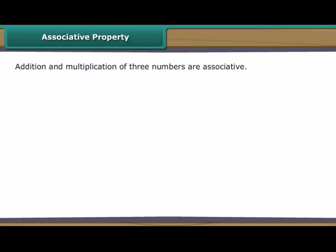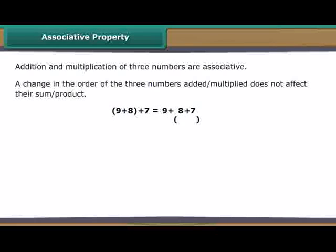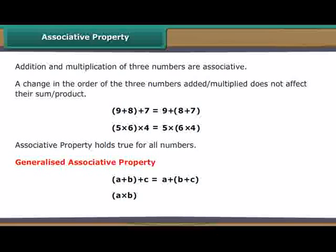Associative property: Addition and multiplication of three numbers are associative. In other words, a change in the order of the three numbers added or multiplied does not affect their sum or product. 9 plus 8 in brackets plus 7 is the same as 9 plus 8 plus 7 in brackets. 5 into 6 in brackets into 4 is the same as 5 into 6 into 4 in brackets. Associative property holds true for all numbers. We can therefore generalize it with variables as bracket starts A plus B bracket closes plus C is equal to A plus bracket starts B plus C bracket closes. Bracket starts A into B bracket closes into C is equal to A into bracket starts distributive property.